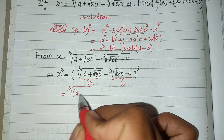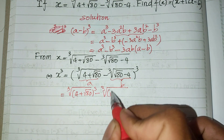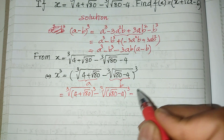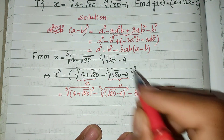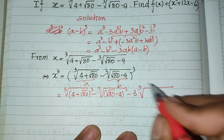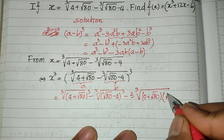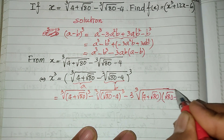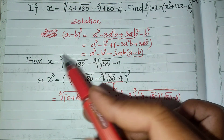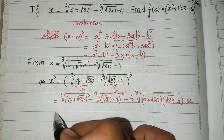So the cube root of (4 plus square root of 80) power 3, minus the cube root of (square root of 80 minus 4) power 3, minus 3 times the cube root of A multiplied by B. These are the same, so we get: (4 plus square root of 80) multiplied by (square root of 80 minus 4). Then A minus B, which equals 8, is replaced by A.